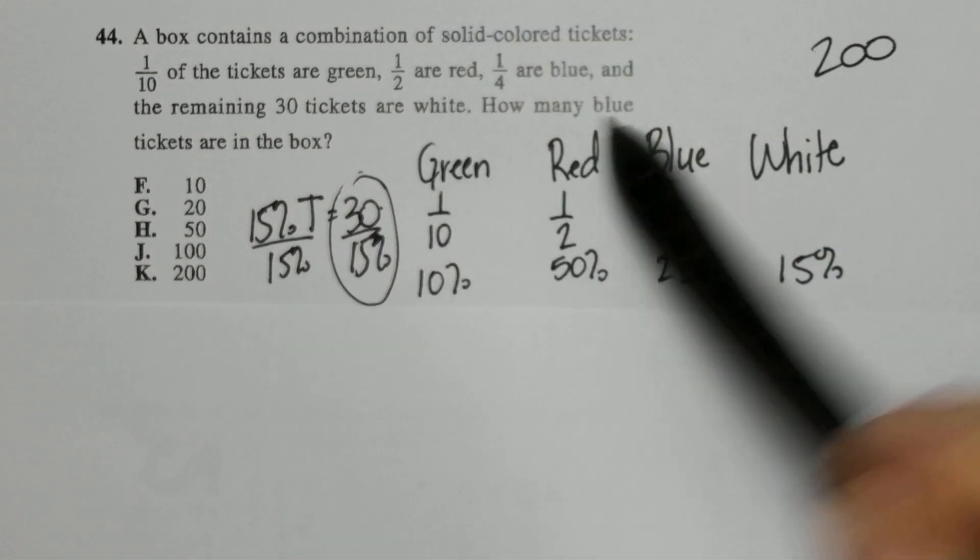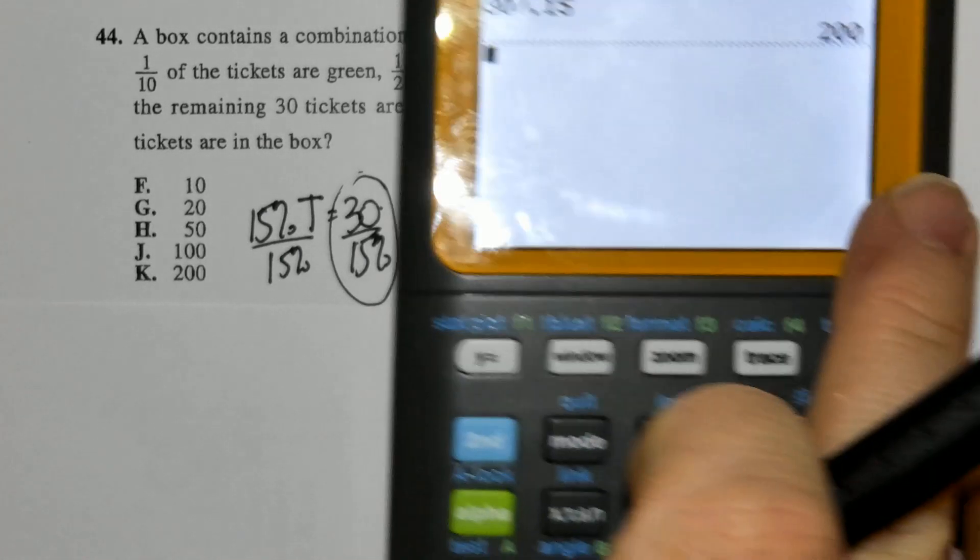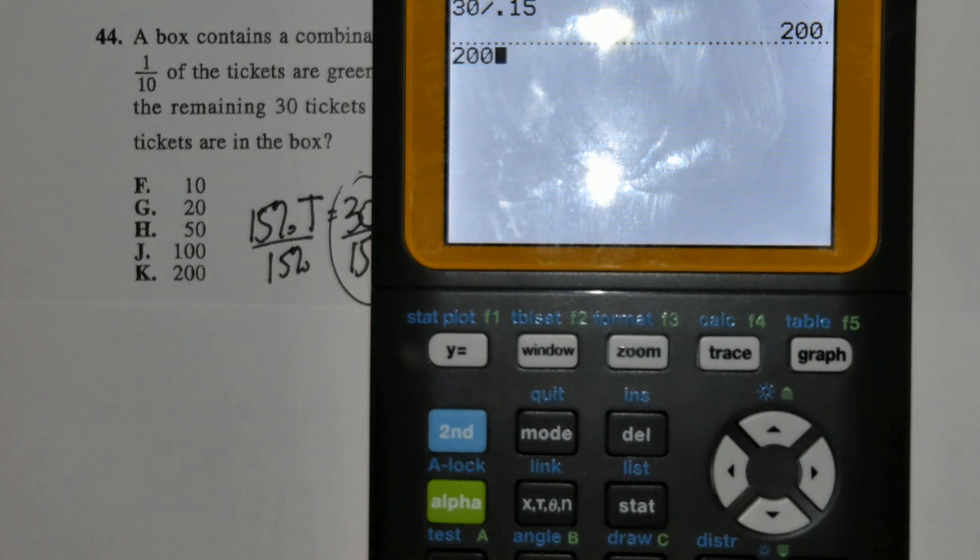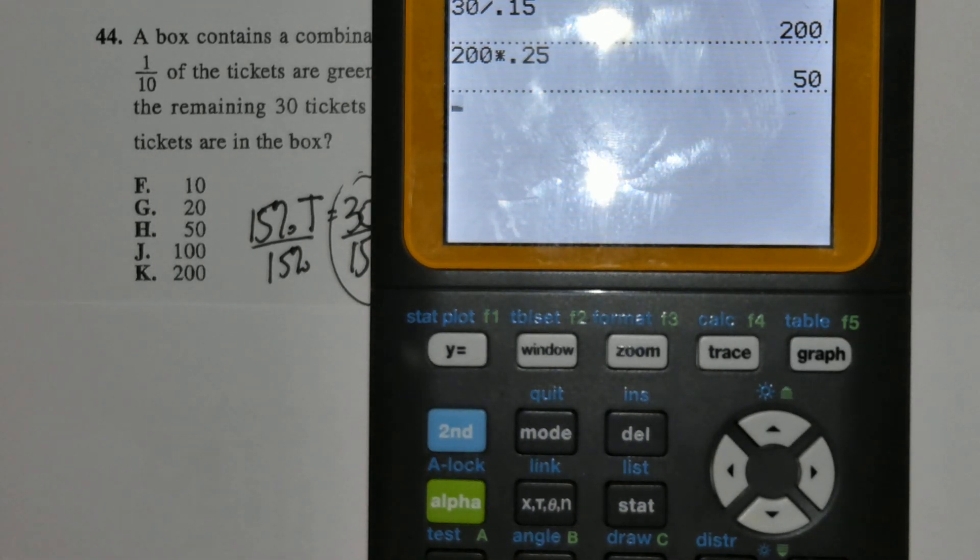How many are blue? 1 fourth, or 25% of this total number are blue. So I can take 200 times 25% to get an answer of 50, option H.